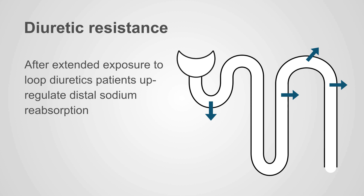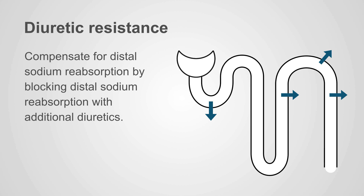This also occurs after extended exposure to loop diuretics. Patients upregulate distal sodium reabsorption — the loop diuretic causes a lot of distal sodium delivery, and the kidney responds by upregulating sodium reabsorption. We can actually see hypertrophy of the distal convoluted tubule on kidney biopsies in patients who have been on loop diuretics.